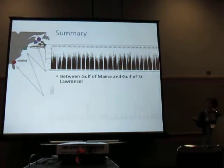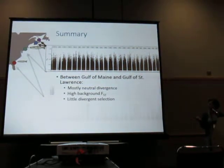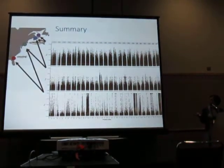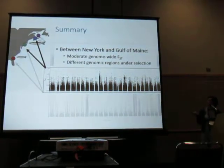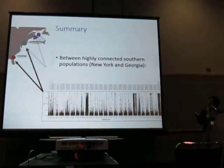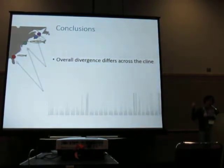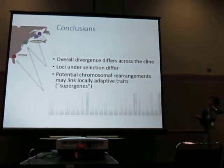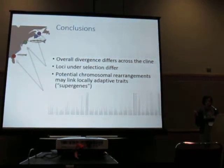To sum up: between the Gulf of Maine and Gulf of St. Lawrence, we see mostly neutral divergence and high background FST, with little evidence of divergent selection. Between New York and Gulf of Maine, we see moderate genome-wide FST and more subtle genomic regions under selection. Between New York and Georgia, we see the lowest genome-wide FST but thousands of fixed SNPs spanning the length of two chromosomes. Across the cline overall, divergence patterns differ and different loci are under selection in different parts of this adaptive cline. Potential chromosomal rearrangements may underlie and link together locally adaptive traits into supergene complexes.